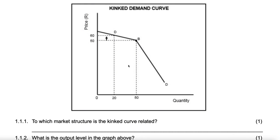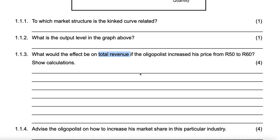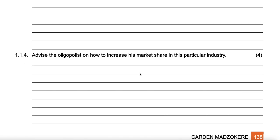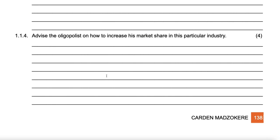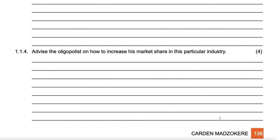Advice you'd give to Celsi, for instance: instead of increasing price, they should pursue non-price competition. They can do door-to-door deliveries, extend their operating hours, do branding — anything that qualifies as non-price competition.